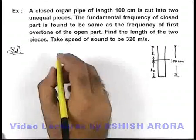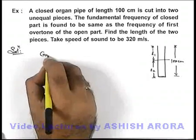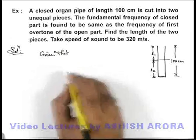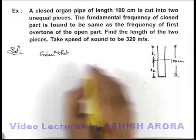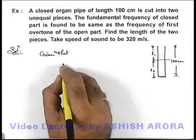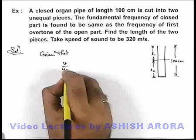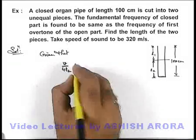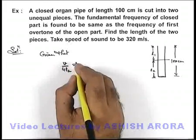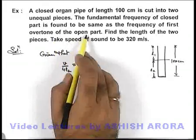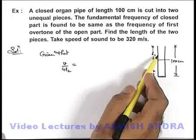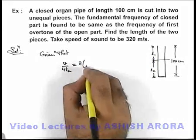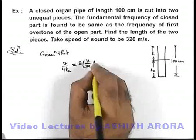Now in this situation we are given that the fundamental frequency of the closed part, that is of length l2, is v by 4l2. This is equal to the first overtone of the open part, which is the second harmonic of the open part, written as twice of v by 2l1.